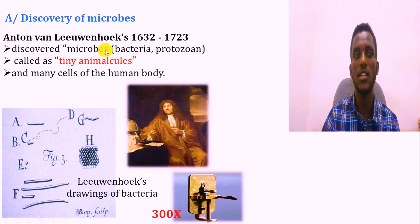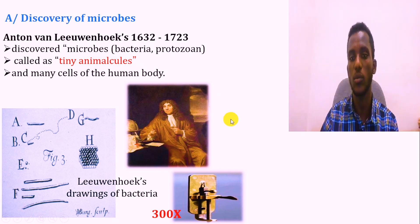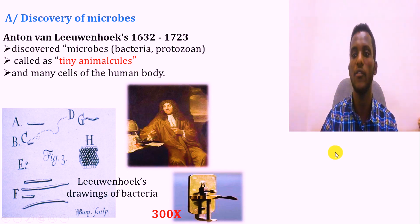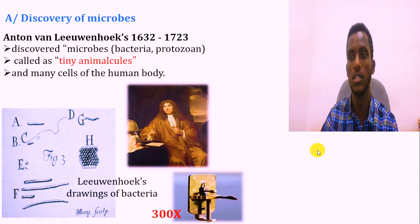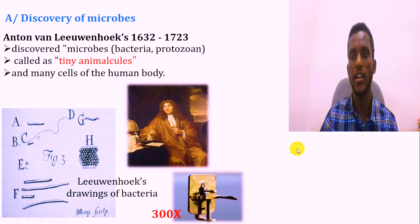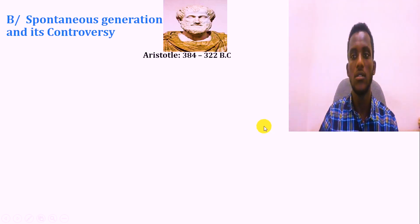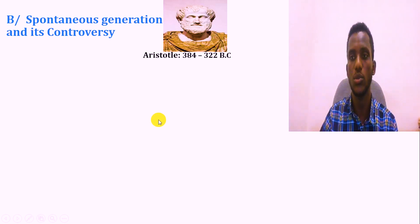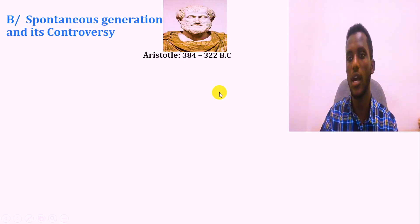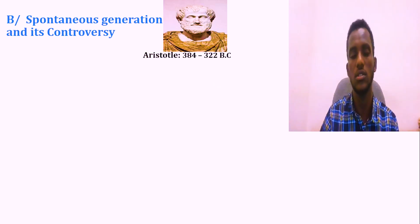After the discovery of microorganisms, a key question arose: where do these microorganisms come from? This led to the debate over the evolution of microorganisms. There are two types of theories: spontaneous generation and biogenesis. The theory of spontaneous generation arose from the time of Aristotle, and many scientists supported this idea.